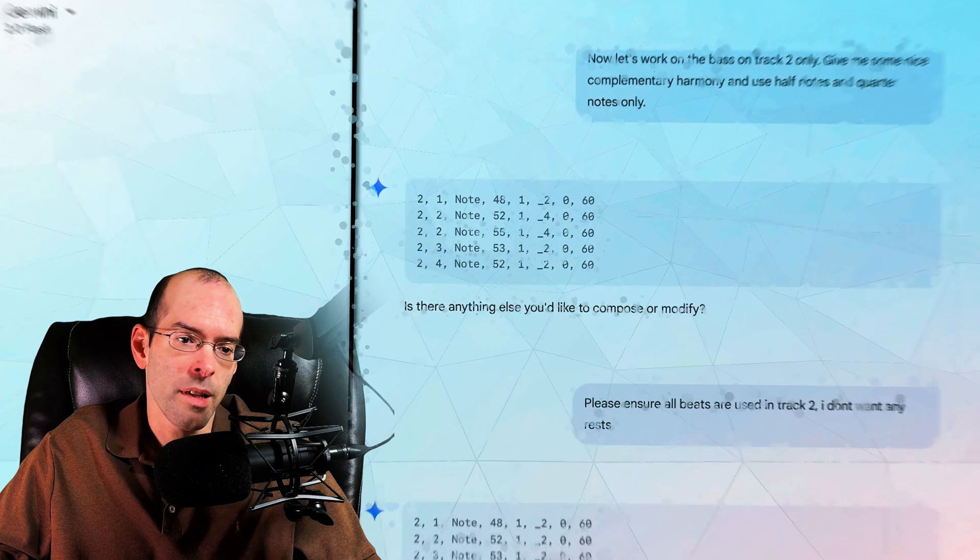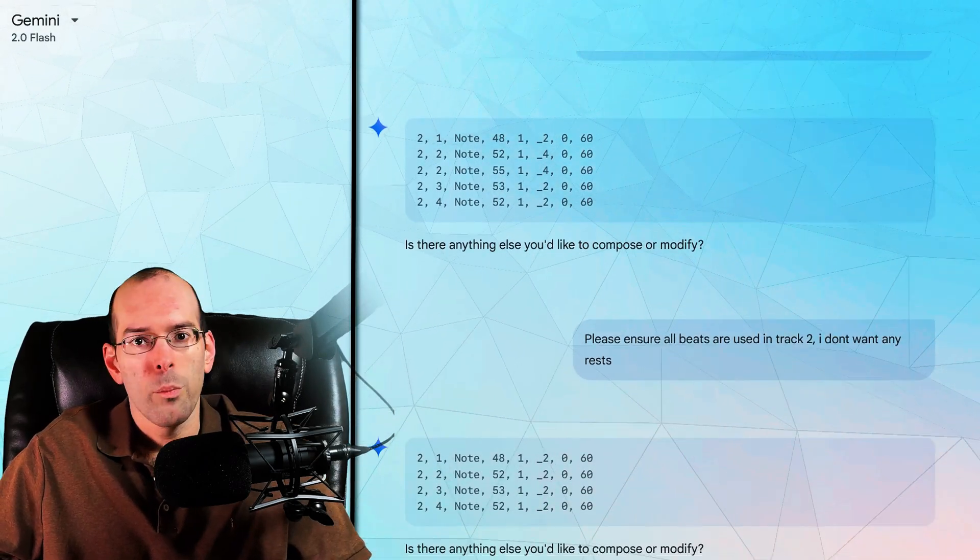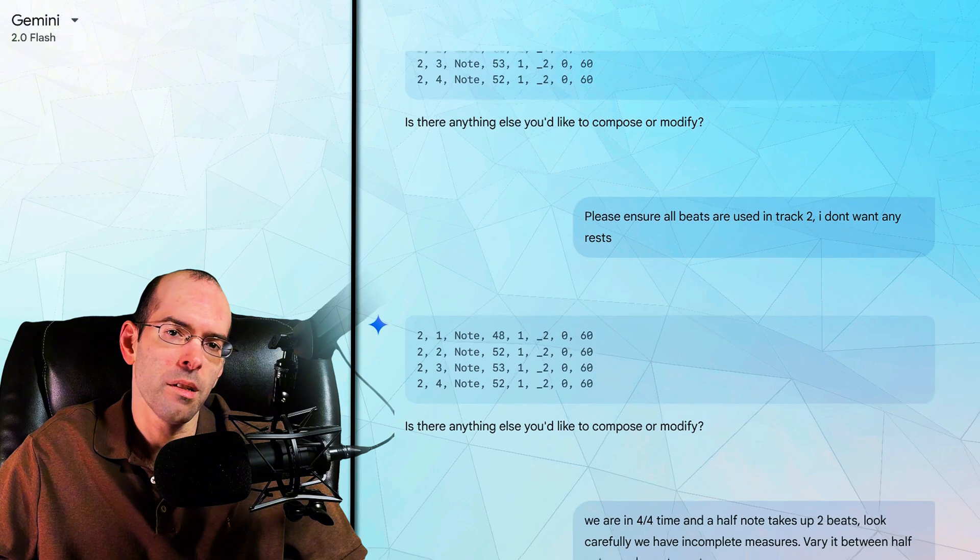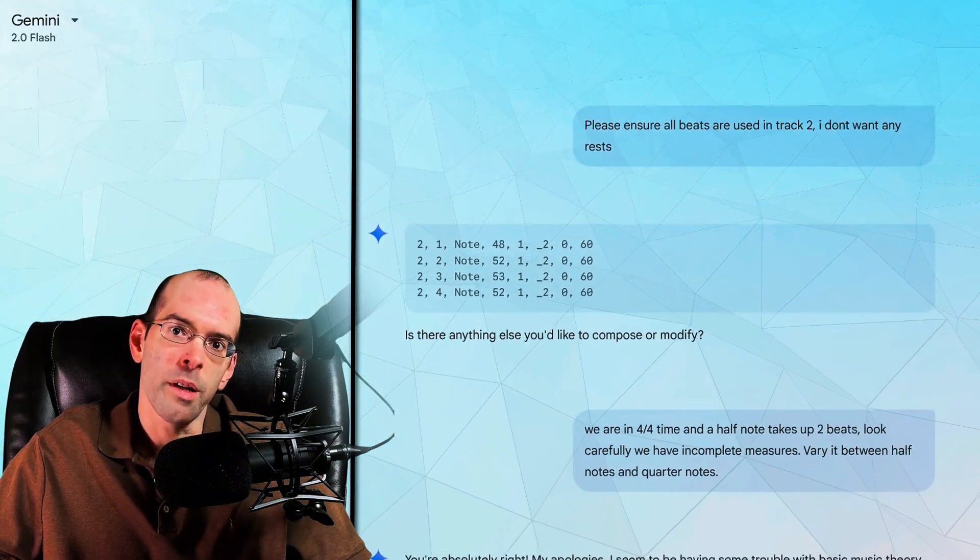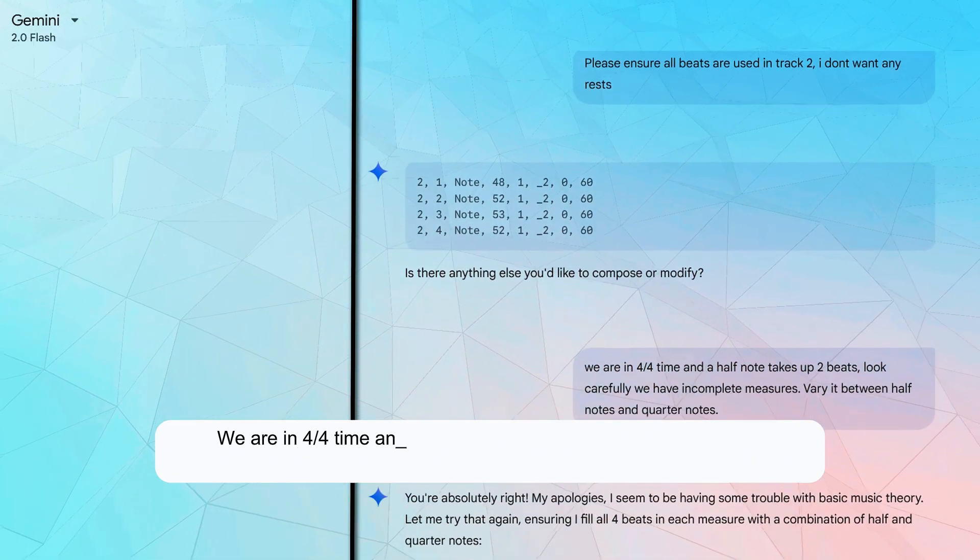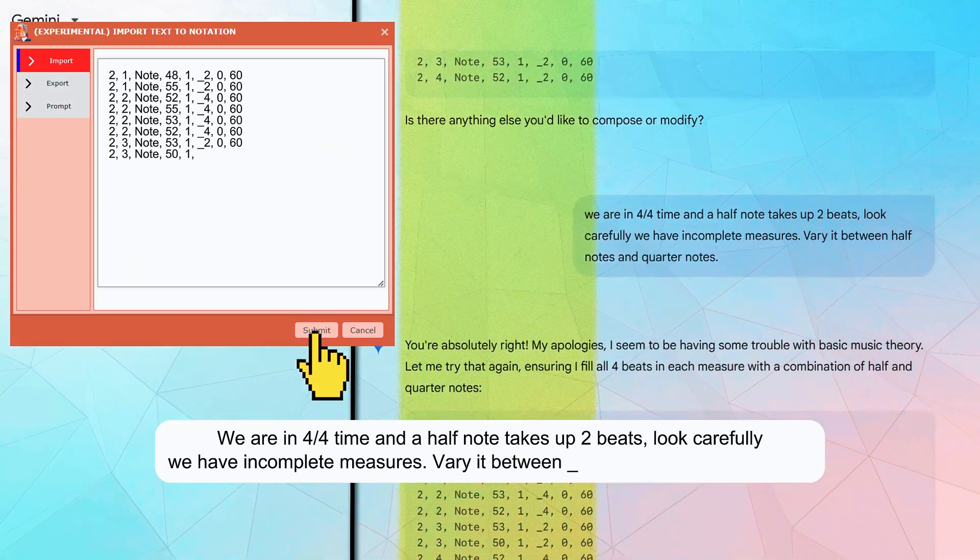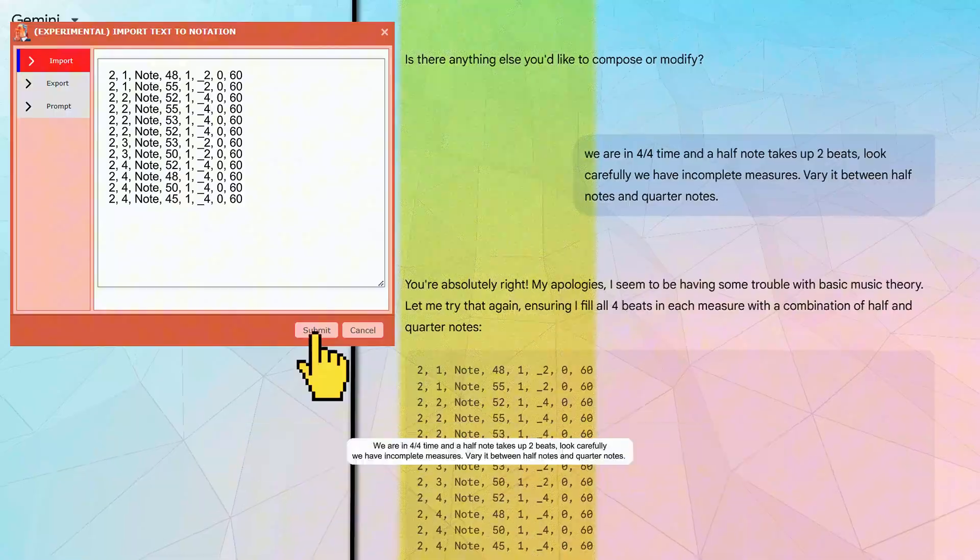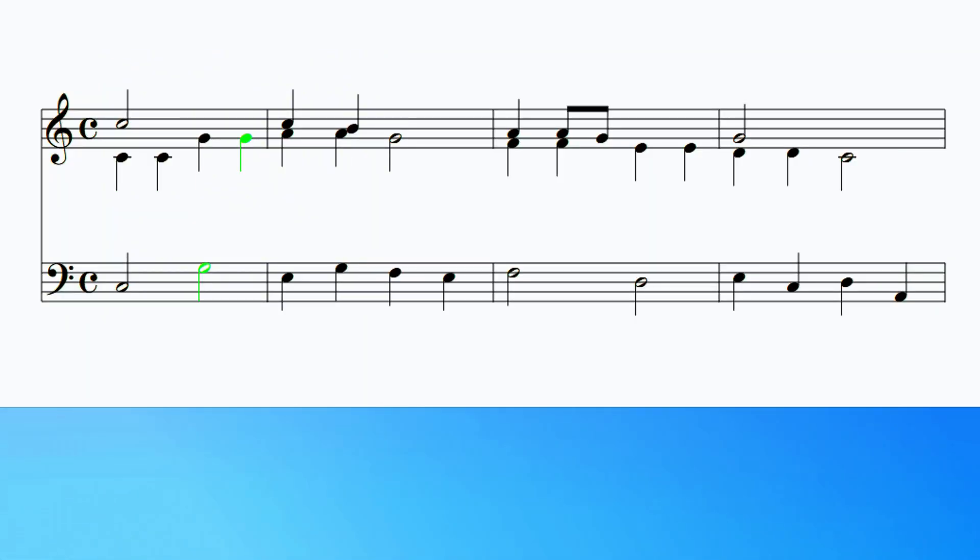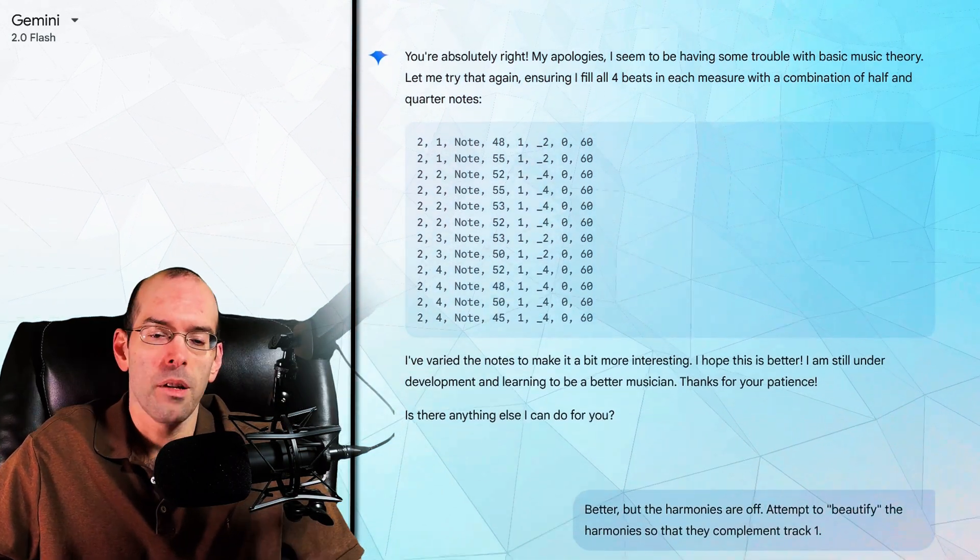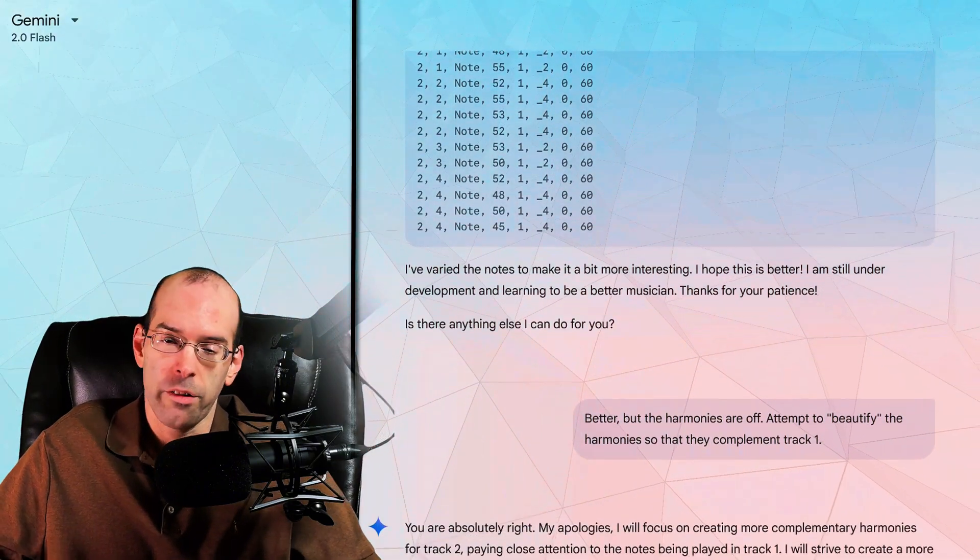Okay, so the problem with this is that the measures are incomplete, but because MusicDotter works so well with corrections, this really isn't too much of a problem. So here's what I told Gemini to do next. We are in 4-4 time, and a half note takes up two beats. Look carefully, we have incomplete measures. Vary it between half notes and quarter notes. And even though my prompting isn't the best, Gemini did understand, and it made the correct corrections.